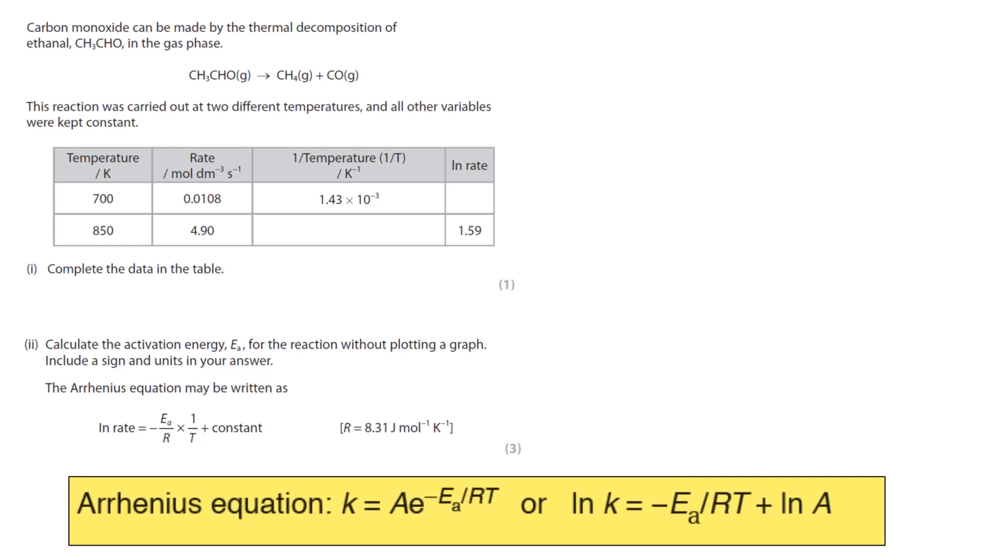I'm putting the Arrhenius equation and its logarithmic version from the data sheet at the bottom of the screen for reference. So to work out the missing value for natural log of rate, you simply use the natural log button and enter 0.0108. And for the 1 over T, you just take the T value, 850, and then 1 over that gives you the value that goes in here.